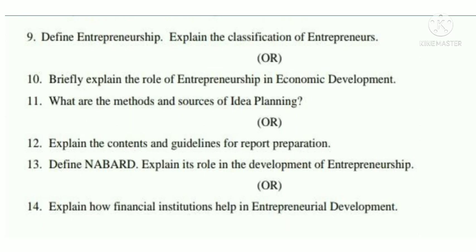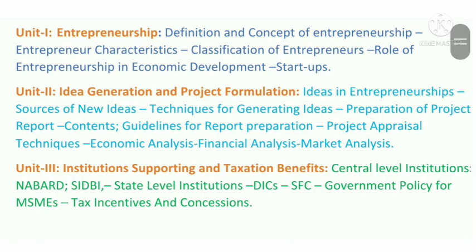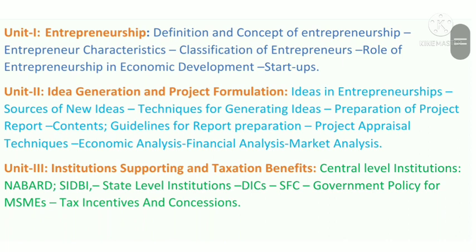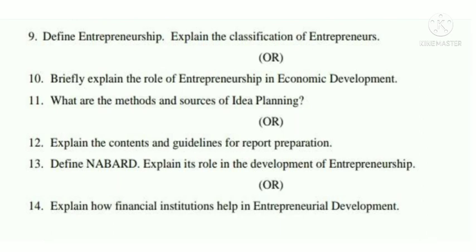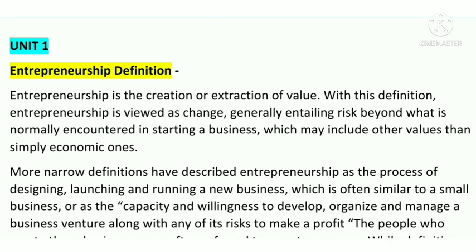Unit 3 covers about half of Section B. Questions 13 and 14 come from Unit 3 topics: Central Level Institutions (NABARD — 1, SIDBI — 2), State Level Institutions (DICS — 3, SFC — 4), Government Policy for MSMEs — 5, Tax Incentives and Concessions — 6, totalling around 7 to 8 topics. Prepare at least 4 of these for the exam.